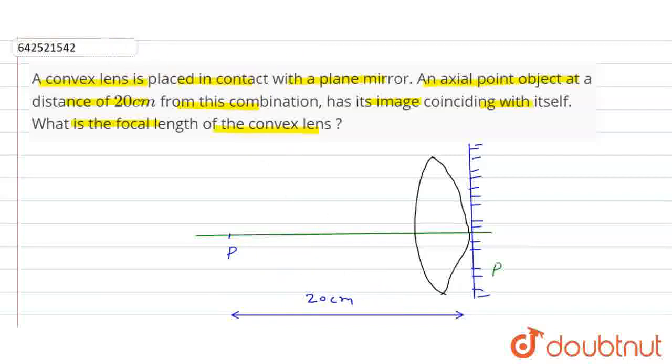Here see, when the rays go from the principal - here, this point object O - the ray will go like this. And parallel to here, from here. Because this is the convex lens.